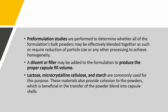Pre-formulation studies are performed to determine whether all the bulk powders may be effectively blended together. If you are going to blend your active ingredient, you might want to use a diluent or filler. The primary use of a diluent or filler is to produce the proper capsule fill volume, since it is usually insufficient to simply put the active ingredient alone. Examples of diluents or fillers include lactose, microcrystalline cellulose, and starch. Other than acting as a filler, they also provide cohesion to the powders, which is beneficial in the transfer of the powder blend into capsule shells.